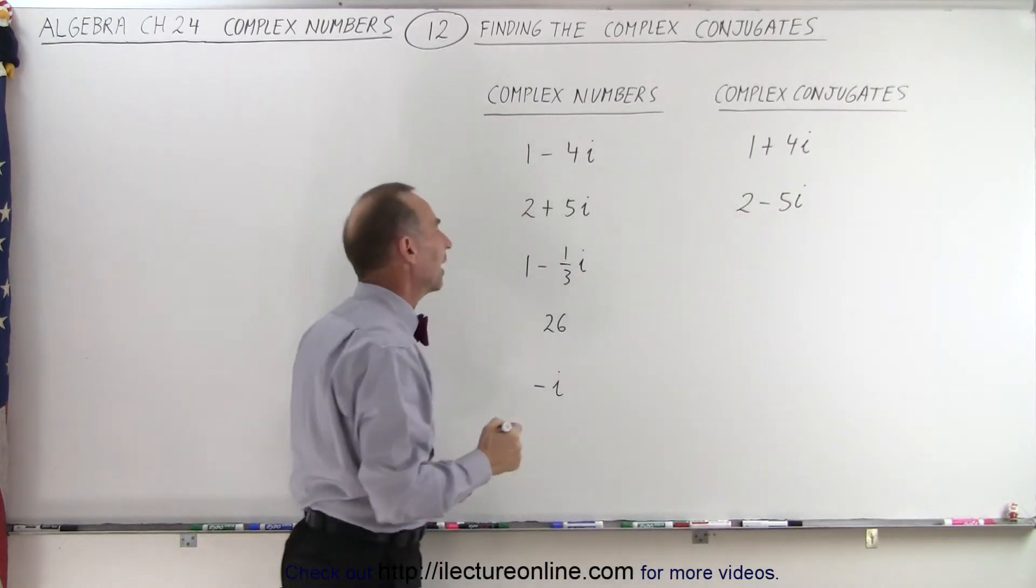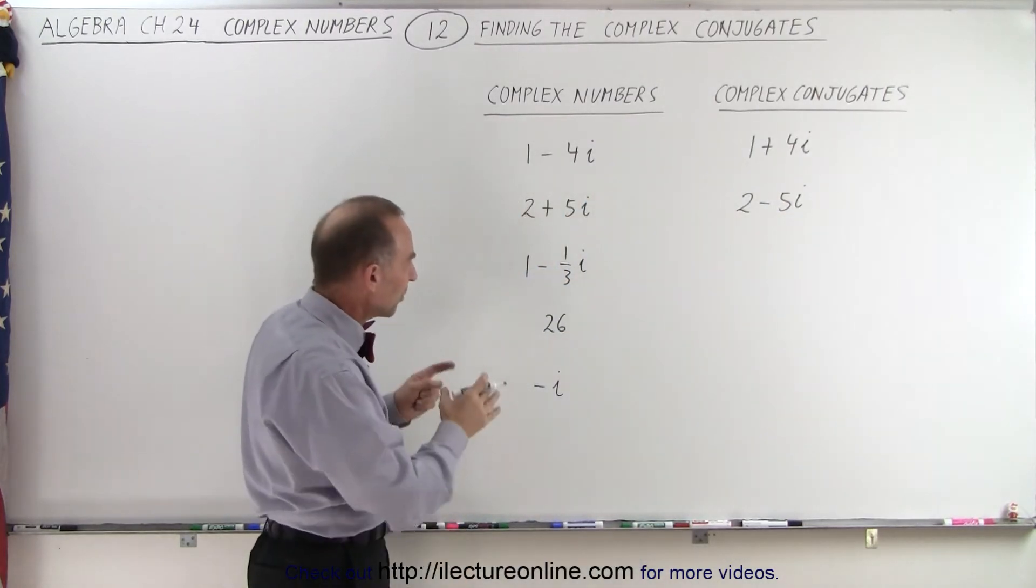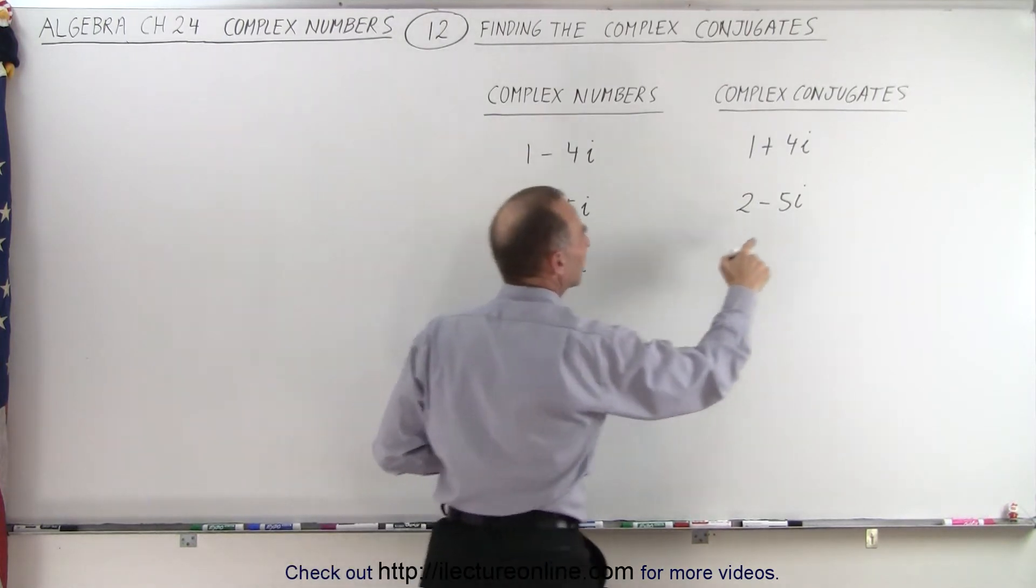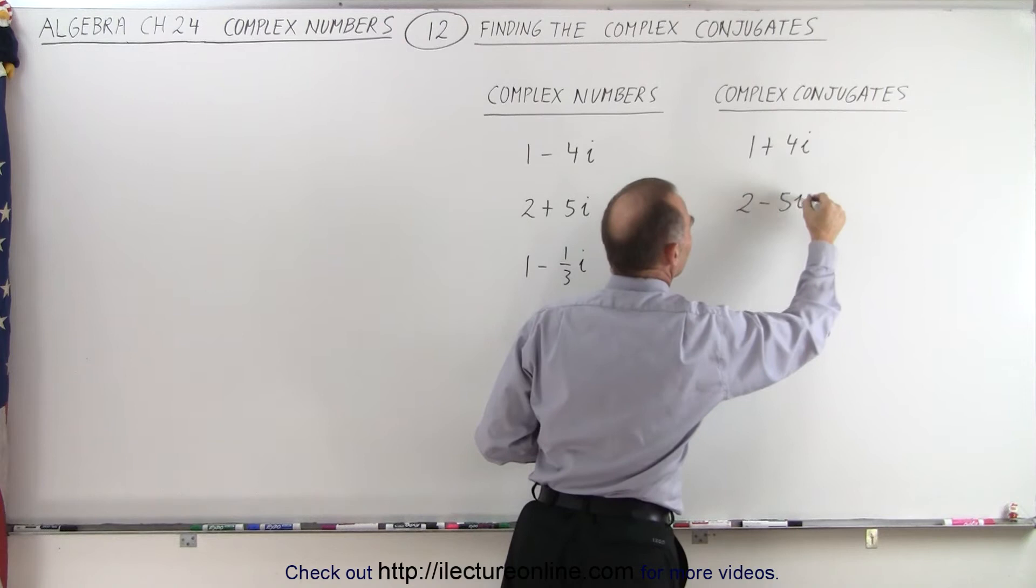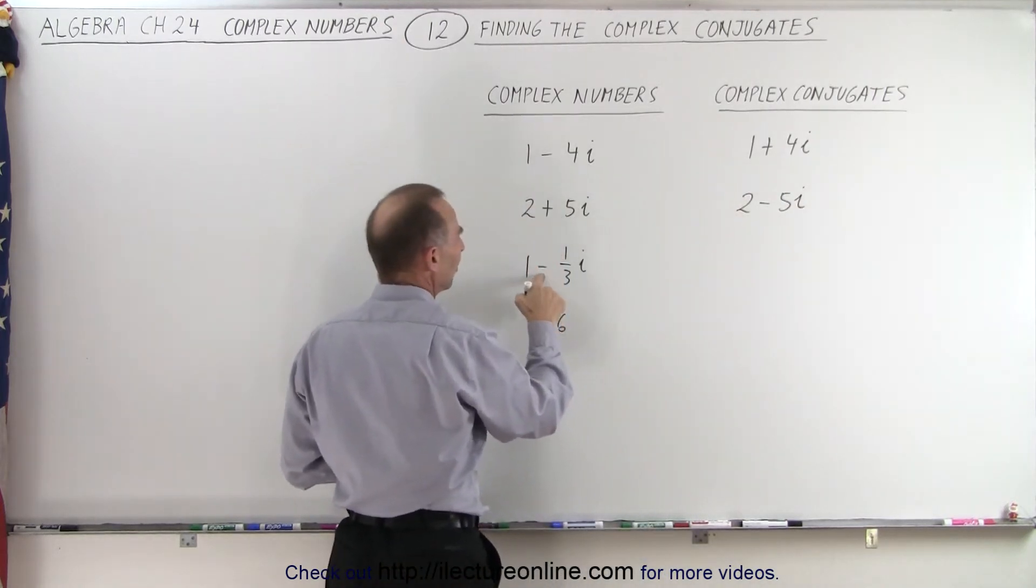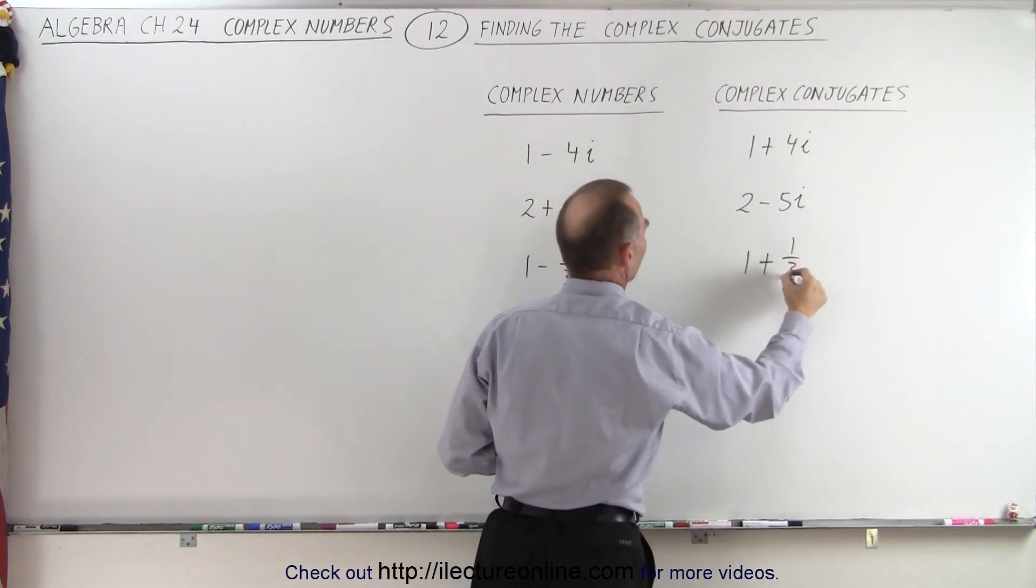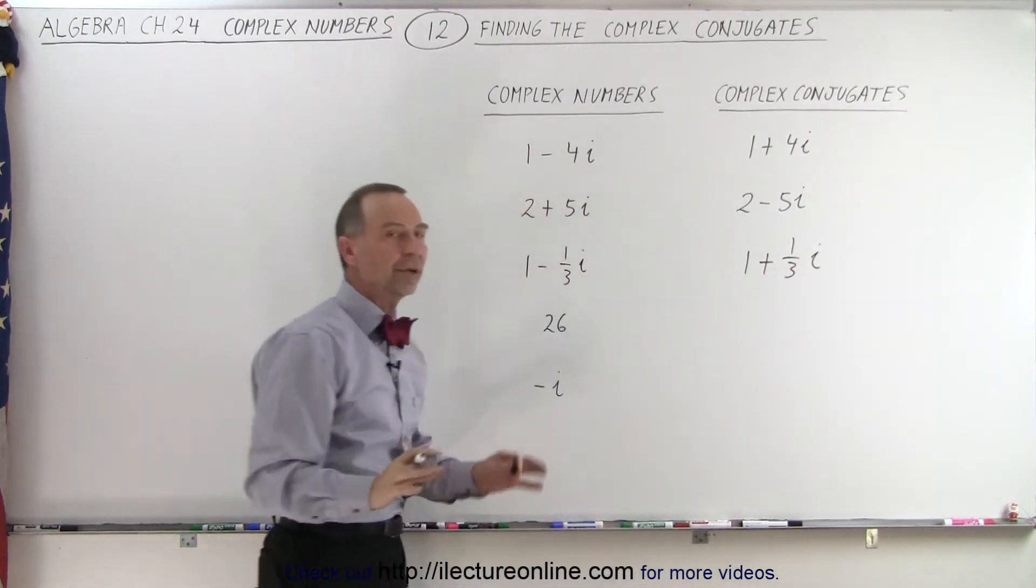And even if they try to deceive you by putting a fraction in front of it, doesn't matter. You simply change the negative to a plus. And I don't like the looks of this i here. There we go, a little better. So we simply change the sign from negative to a plus, so it becomes 1 plus 1 third i. Those are simple enough.